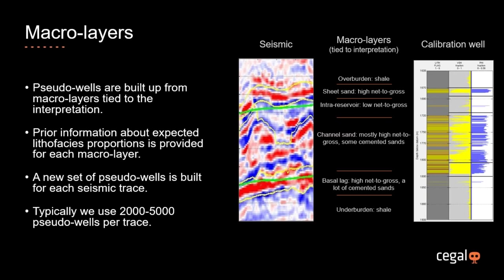Pseudo wells are built up from a number of macro layers tied to the interpretation. Depending on complexity, there may be anywhere from three to ten macro layers. The prior information is parameterized independently for each macro layer. Because the interpretation varies spatially, a new set of pseudo wells must be built for each location, consistent with the interpretation defining the macro layers at that location. We typically need to build somewhere between 2,000 and 5,000 pseudo wells per trace to obtain good results.